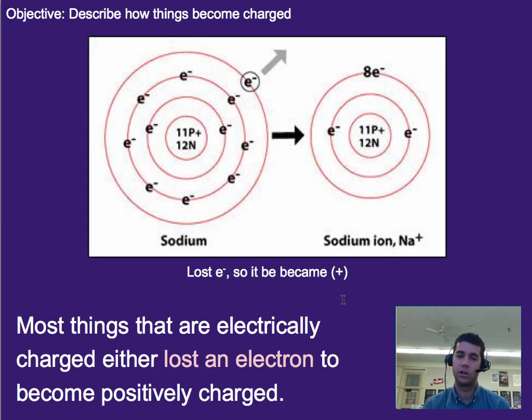So things that are negatively charged almost always have gained an electron. Things that are positively charged have almost always lost an electron. Now I say almost always because there are cases where protons move around, but that only happens in science experiments at SLAC or CERN, the Large Hadron Collider and things like that, or in a few other rare cases. Here we have a sodium atom that starts with 11 protons and 11 electrons. It loses one electron and becomes a sodium ion, and it's positive because it now has more protons than it does electrons.